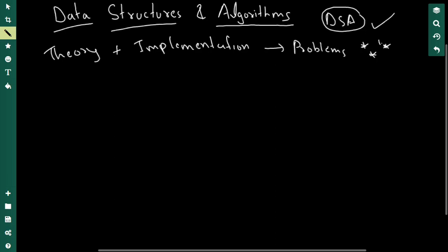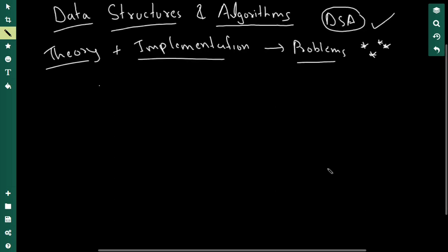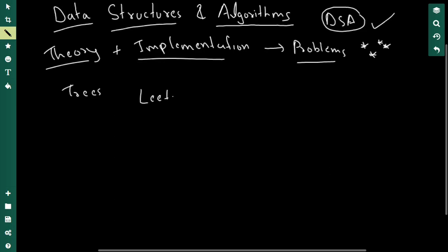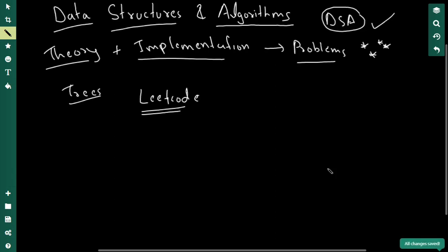For any data structure or algorithm, after learning the theory and doing the implementation, it's time to solve problems. For example, if you were doing trees, you'd go to LeetCode — the best website for DSA problems. I strongly suggest solving problems from LeetCode. Go to the problem section, use the search bar, and search for the topic you're working on, like 'trees'.